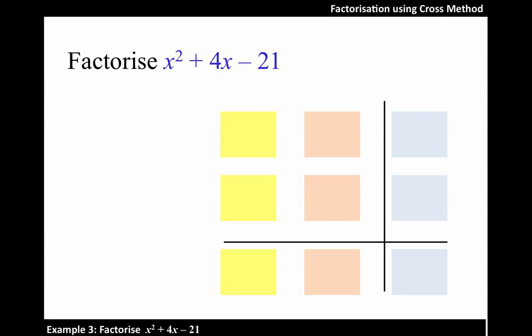Using cross methods to factorize the following expression. First of all, x squared is the product of x and x, and therefore we can write it as shown in the diagram.